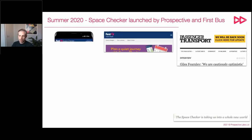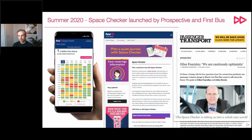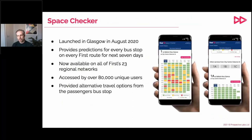With Space Checker we took that technology and turned it into a tool that presents predictions to passengers of how busy their bus is likely to be from their stop at different times throughout the week. We launched this tool last summer in response to the initial easing of lockdown in August. We launched in Glasgow initially, but since then it's been rolled out over all 23 of First's regional networks across the whole of the UK, providing predictions for every single bus stop, every single bus route in the whole country for the next seven days.